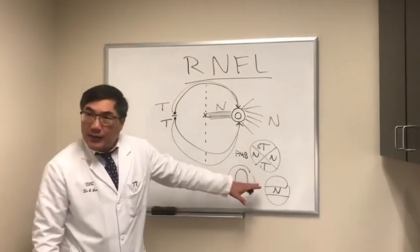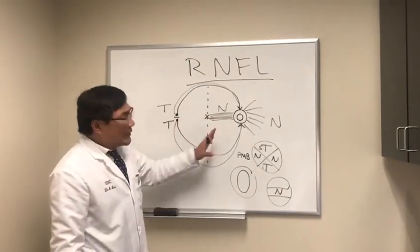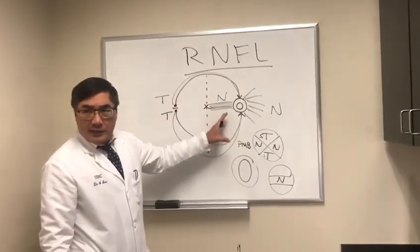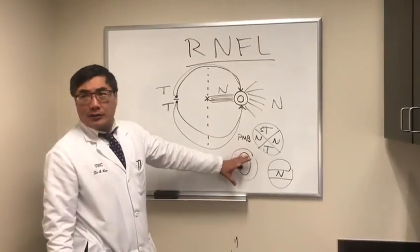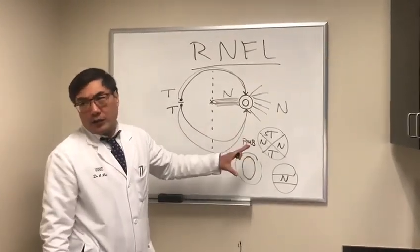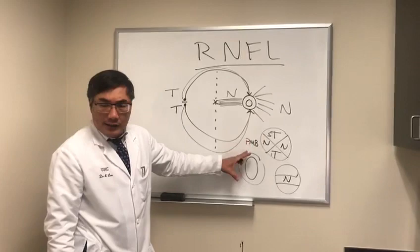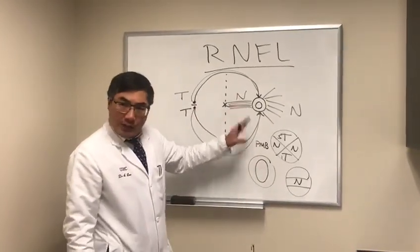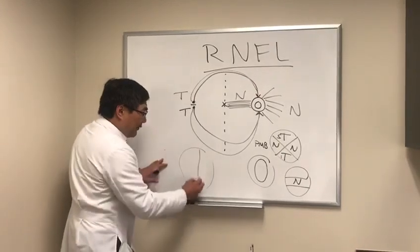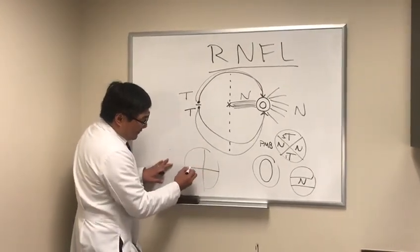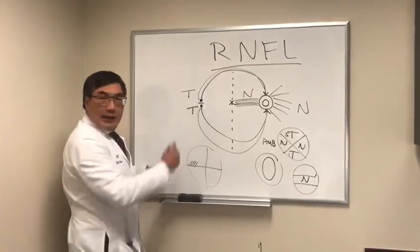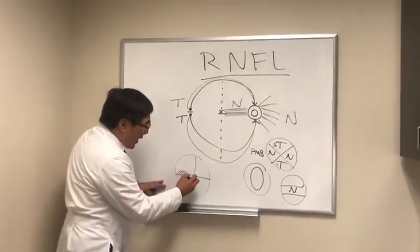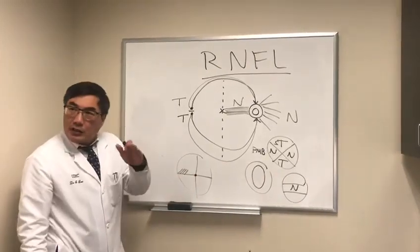most field defects from nerve fiber layer loss are glaucoma—it's the number one cause of nerve fiber layer loss. The ophthalmoscopic feature is cupping, and it's going to match the nerve fiber layer loss. The most common field defect is going to be a nasal step from temporal fiber loss. However, if we have papillomacular bundle dropout, that's going to cause a central scotoma.